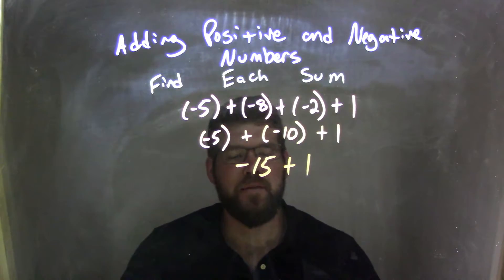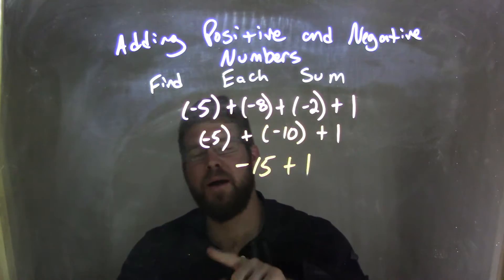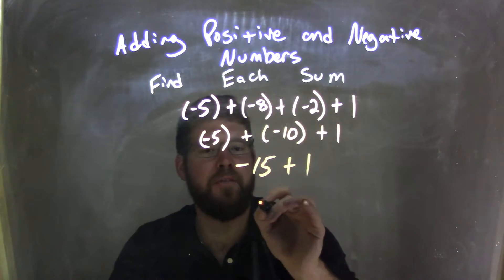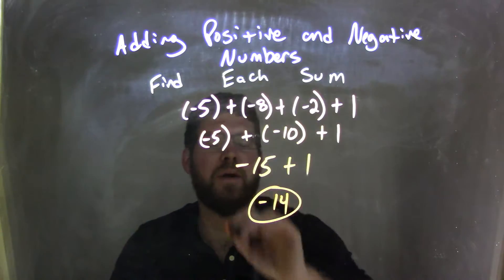And now it's pretty simple. Negative 15 plus 1. One moves it back one notch to the positive direction, but we're still negative, and we have negative 14. That's my final answer.